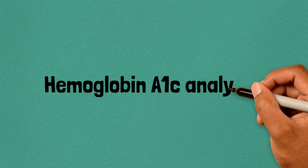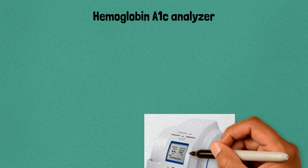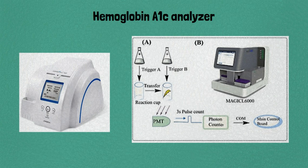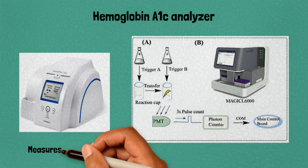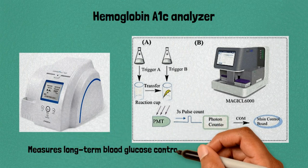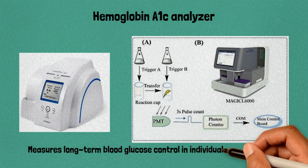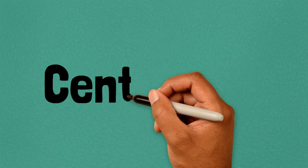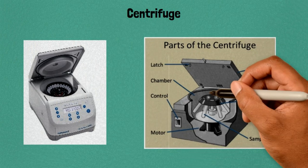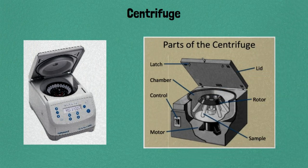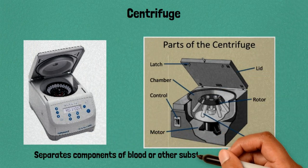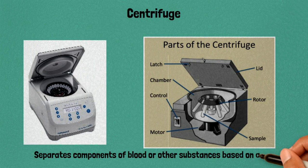Sixty: hemoglobin A1c analyzer, measures long-term blood glucose control in individuals with diabetes. Sixty-one: centrifuge, separates components of blood or other substances based on density.